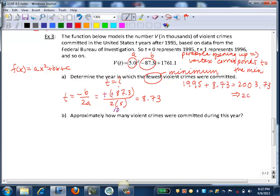So I'm just going to round this to 2004. But again, please pay attention to the problem how they want you to round. So that means in 2004, the fewest violent crimes were committed.